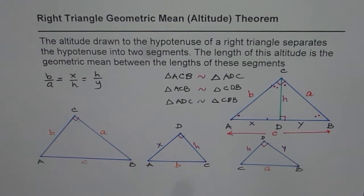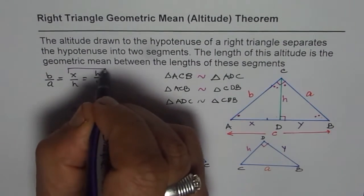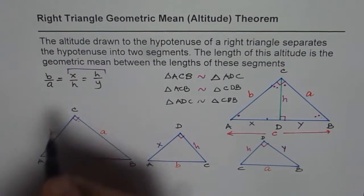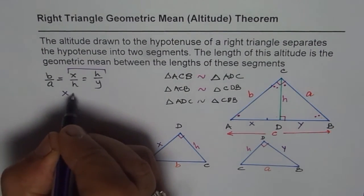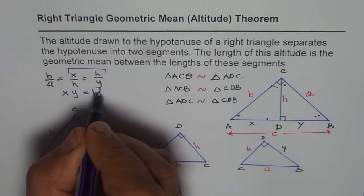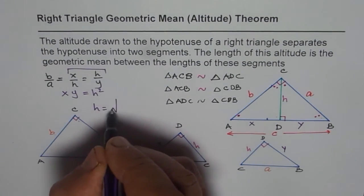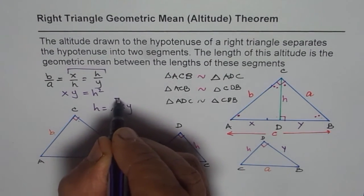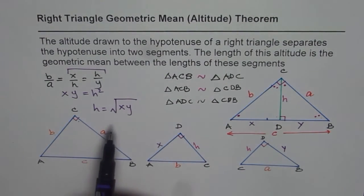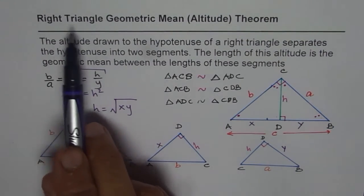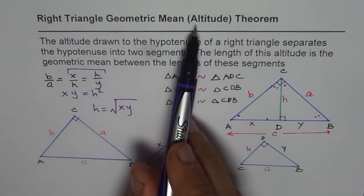Now if we look at the last two, if you cross multiply, what do you get? You get XY equals H squared, or you can say H equals square root of XY. Now that is what we mean when we say Right Triangle Geometric Mean Altitude Theorem.